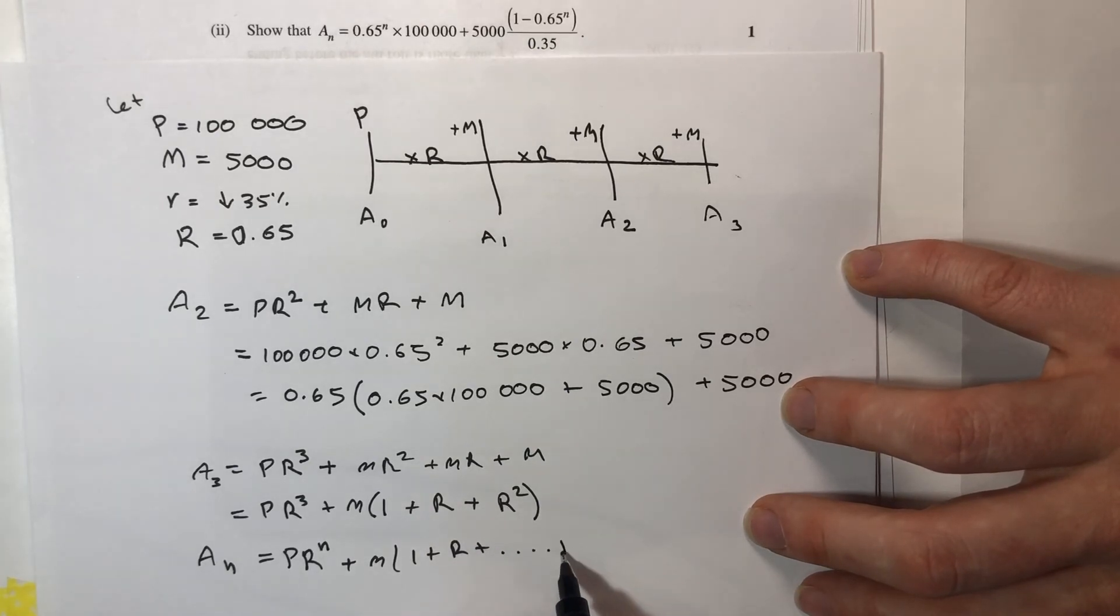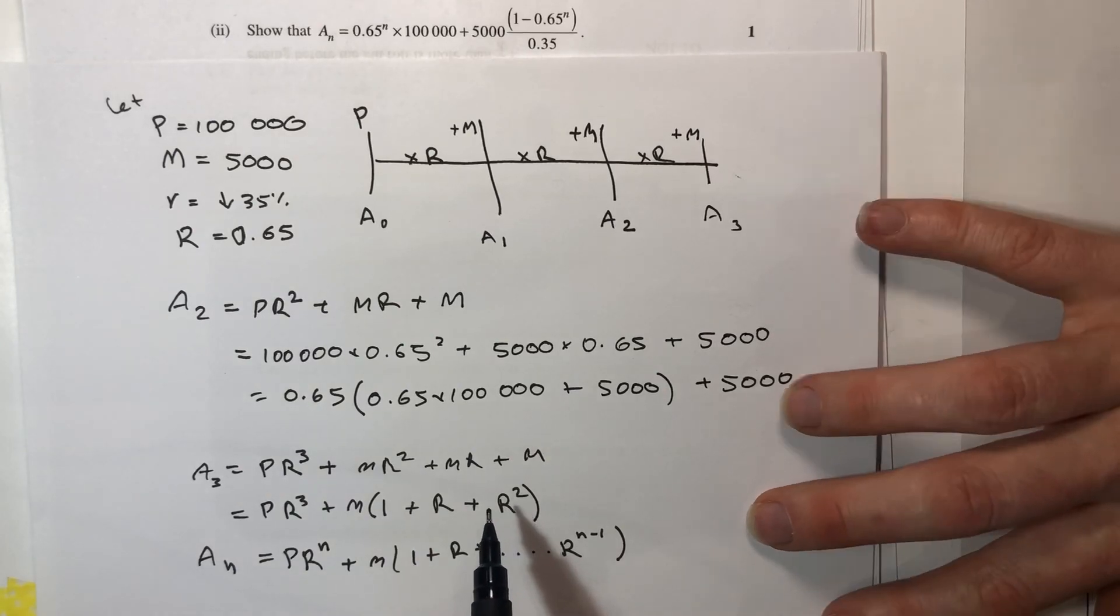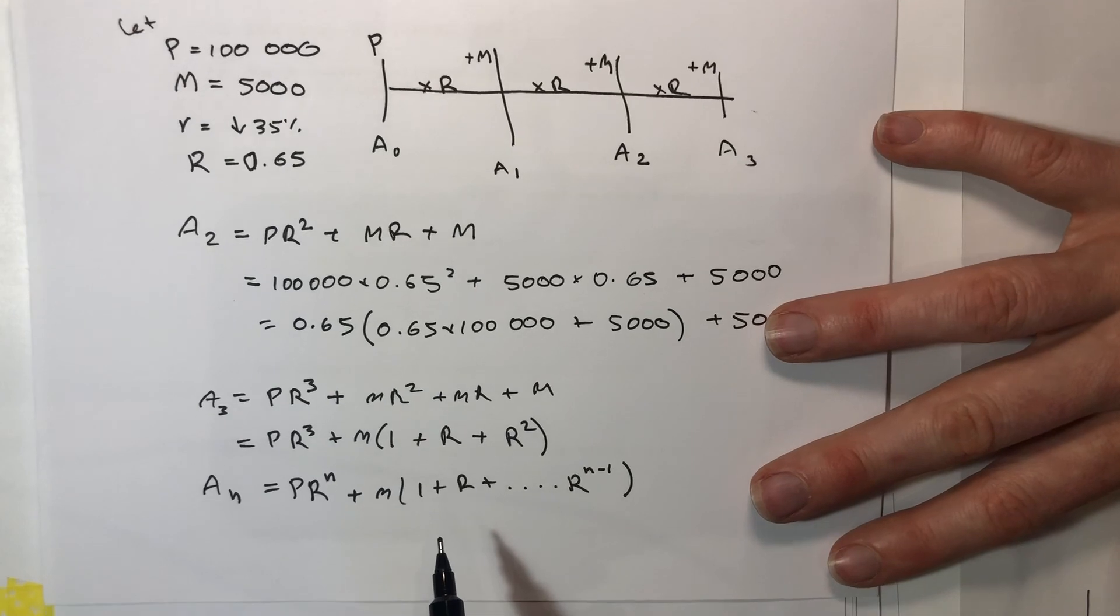My last term would be R to the N minus 1, but don't forget that there are actually N terms in this series. When there were three terms, or at A3 there were three terms, so at AN there are N terms. To finish this off,